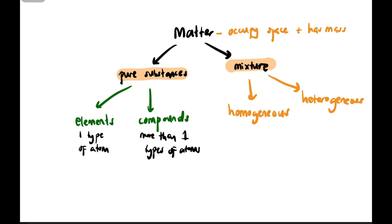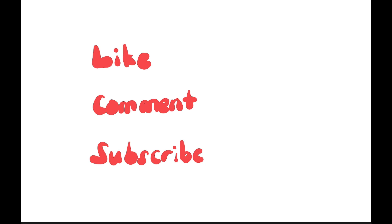Mixtures have homogeneous and heterogeneous. Homogeneous has no visible separation between components. Heterogeneous has visible separation between components. That's it. If you enjoy the video, don't forget to like, comment, and subscribe. Thank you.